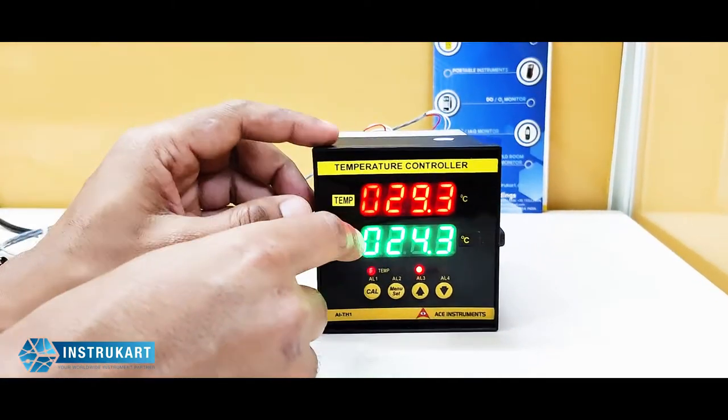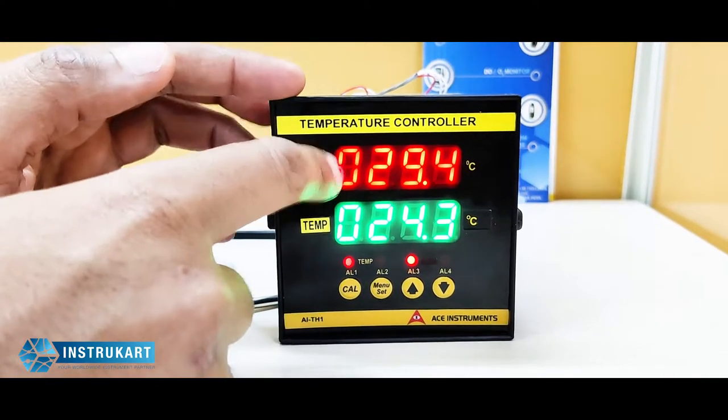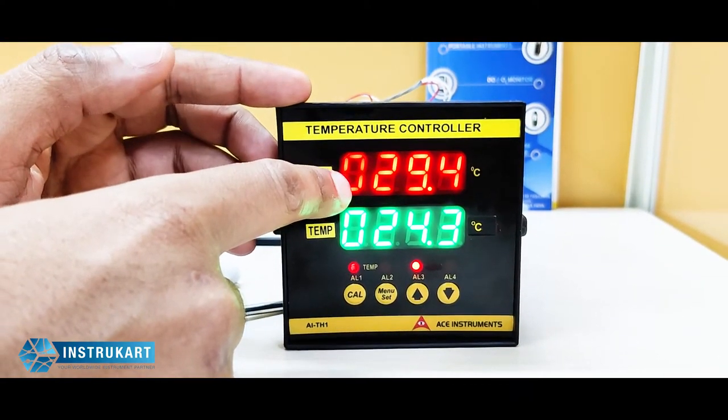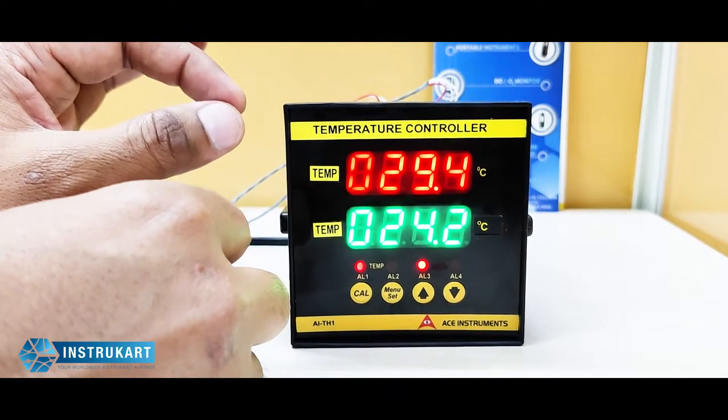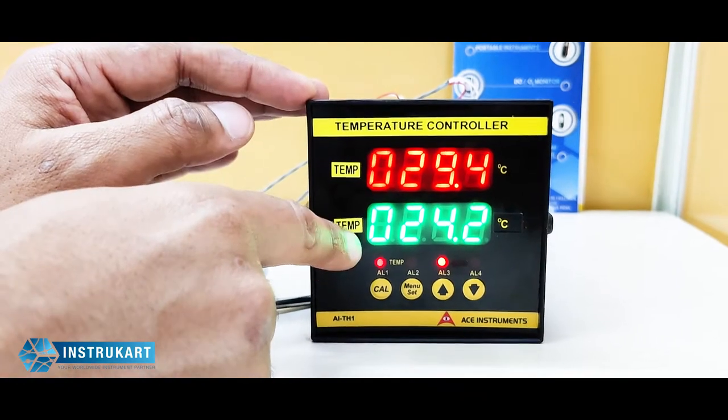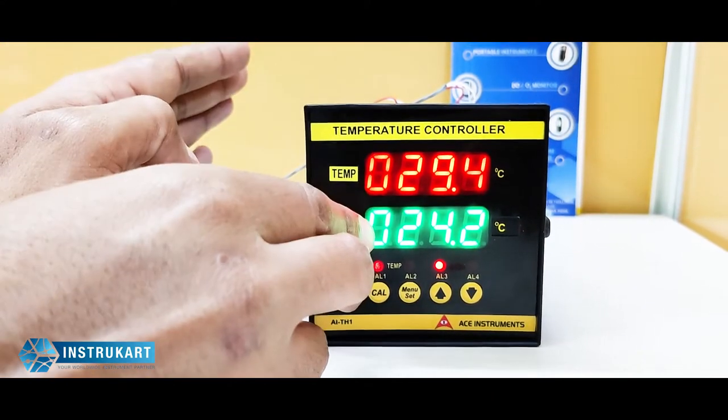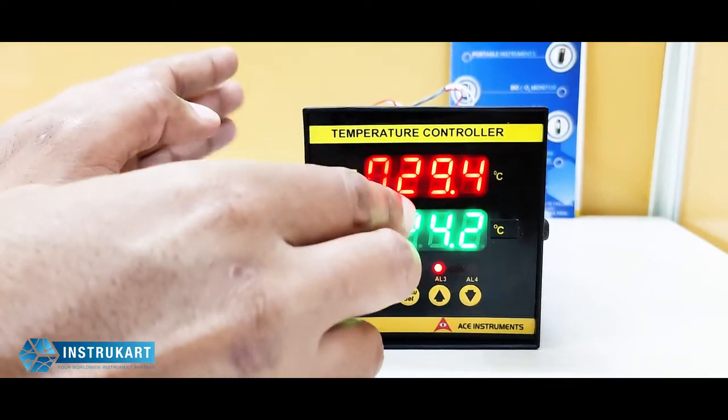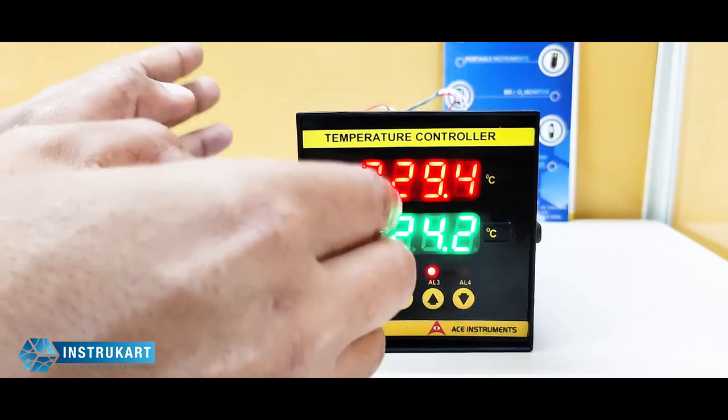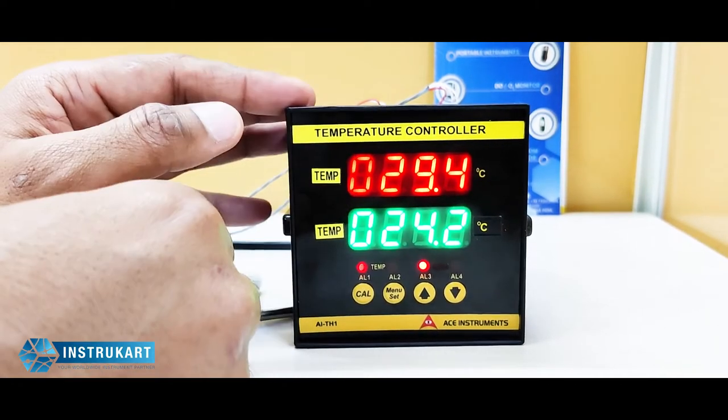Towards the controller, if we see, there are two displays as you can see, and these have also got two set points for each process value, which means low high for temperature 1 and low high for temperature 2. It has also got a relay option where you can control your motor, fan, or any pump based on the set point violation.